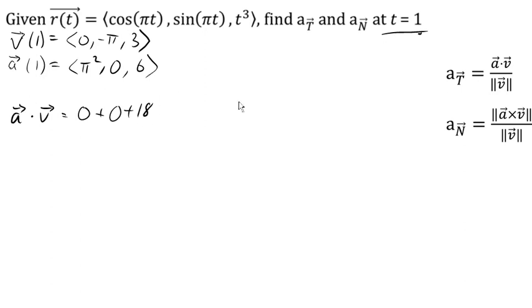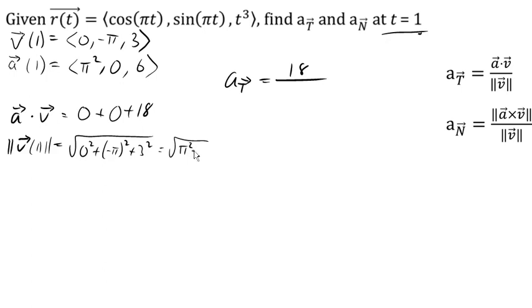So we got 18 divided by the magnitude of the velocity vector. Again, we're doing it at 1 here. So the magnitude will be 0 squared plus negative pi squared plus 3 squared, so we got a pi squared plus 9. So we got pi squared plus 9 here. And there is our acceleration, the magnitude of acceleration in the tangential direction.